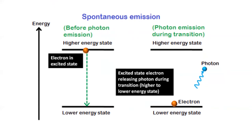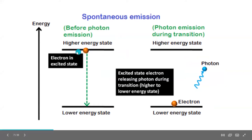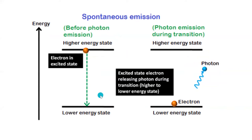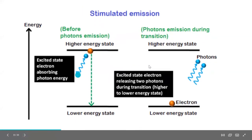The second step is called spontaneous emission. The electrons at the higher energy state return to the ground state by emitting a photon — that is spontaneous emission. From the higher energy state, the electron emits a photon and moves to the lower energy state. This occurs naturally once the lifetime is completed. The lifetime of an electron in the excited state is approximately 10 to the power of minus 8 seconds.